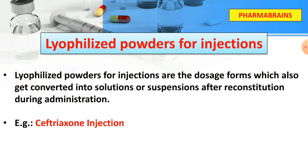Next is lyophilized powder for injection. This is a dry powder dosage form. After reconstitution during administration, the lyophilized powder is converted into a solution or suspension. An example of this is Ceftriaxone injection.